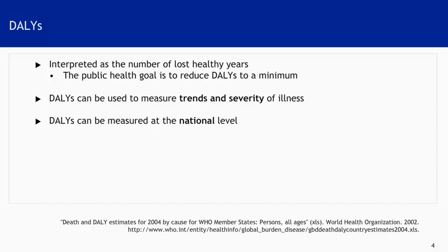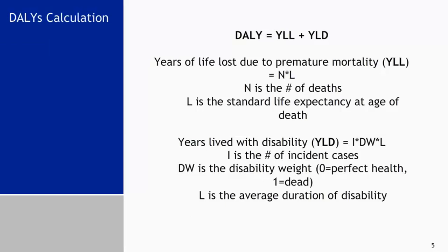The conceptual calculation for DALYs adds the years of life lost due to premature mortality with the years lived with disability. The first part is straightforward to estimate: the years of life lost due to premature mortality can be estimated by multiplying the number of deaths by the standard life expectancy.